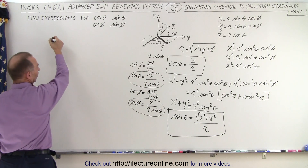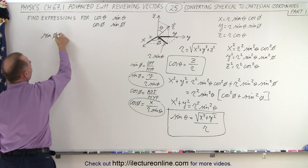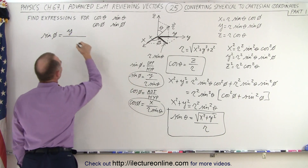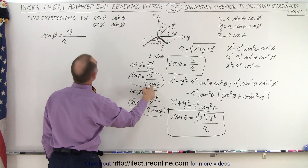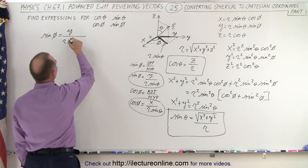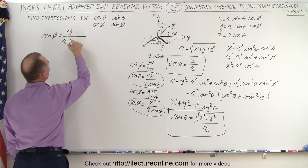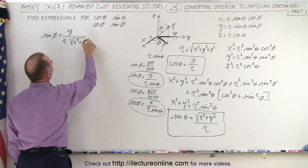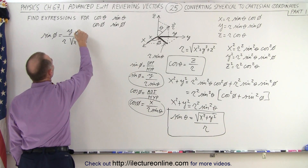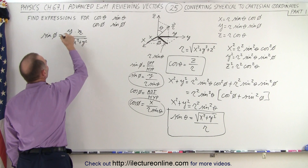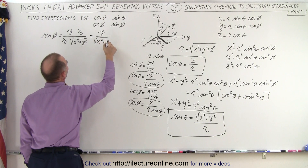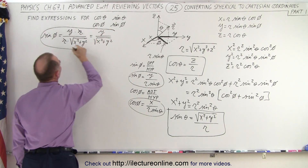Plugging in the expression for sine of theta, the sine of phi equals y divided by r times sine of theta. Since sine of theta equals the square root of x squared plus y squared divided by r, substituting gives y divided by r times that fraction — the r's cancel out — leaving sine of phi equal to y divided by the square root of x squared plus y squared.